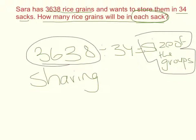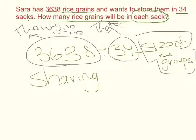In sharing, the dividend means the total number of rice grains, the divisor means the total number of groups, and the quotient, as I already said, is the size of each group. That is why it is sharing.